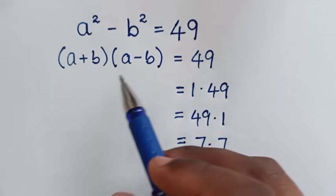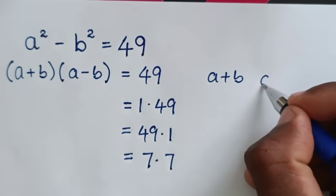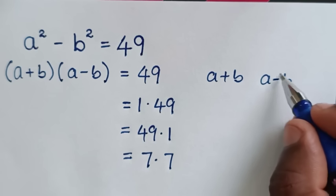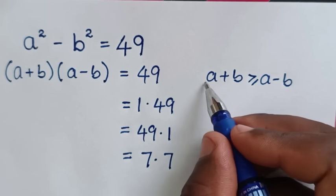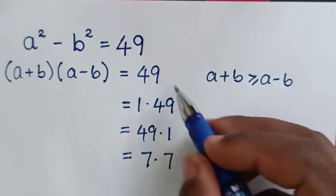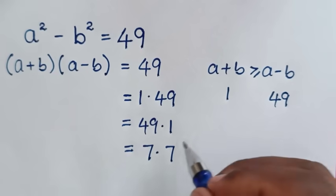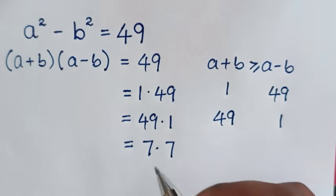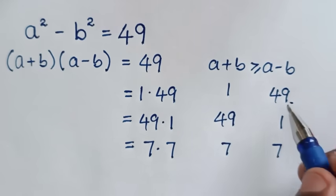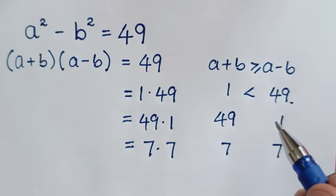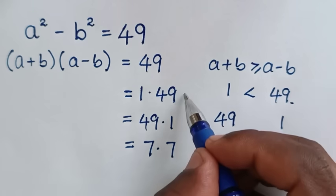Now looking at the relation between a plus b and a minus b — one has addition, the other has subtraction — so a plus b is greater than or equal to a minus b. Using 1 and 49: 1 is less than 49, but a plus b must be greater than a minus b, so assigning a plus b equals 1 and a minus b equals 49 is not possible.